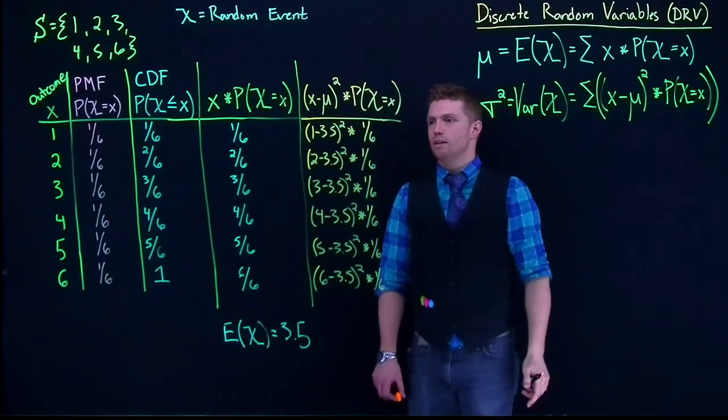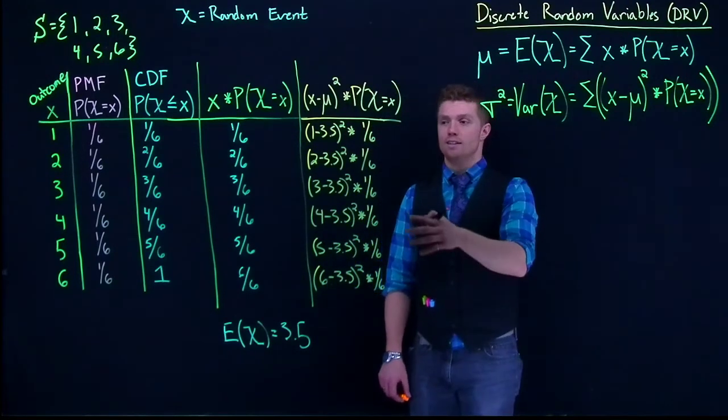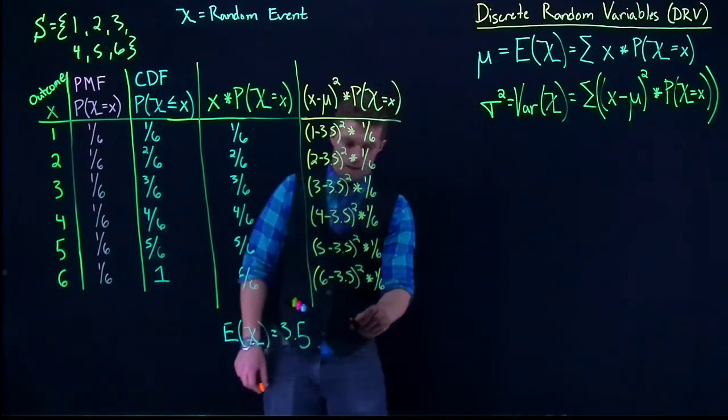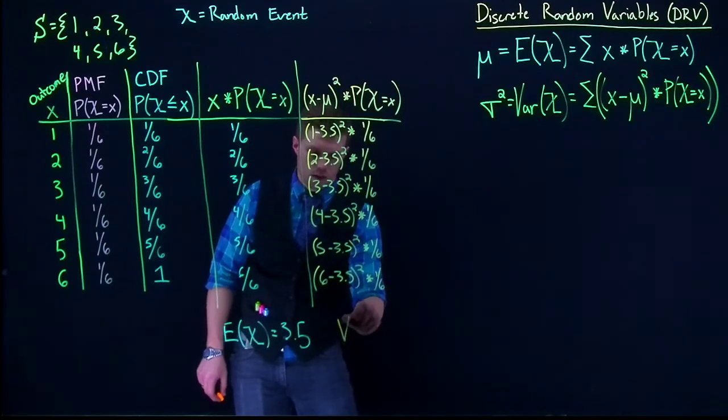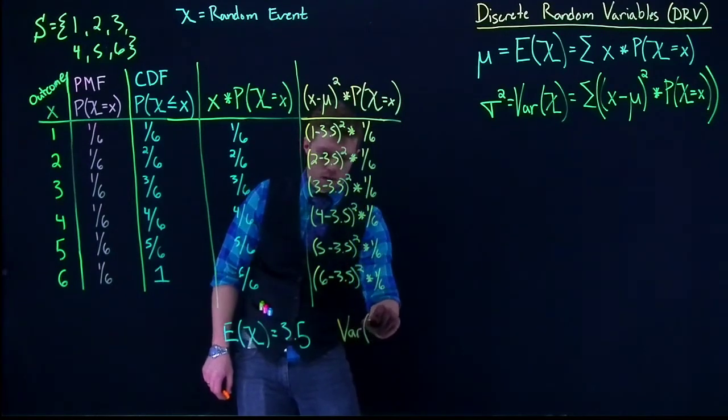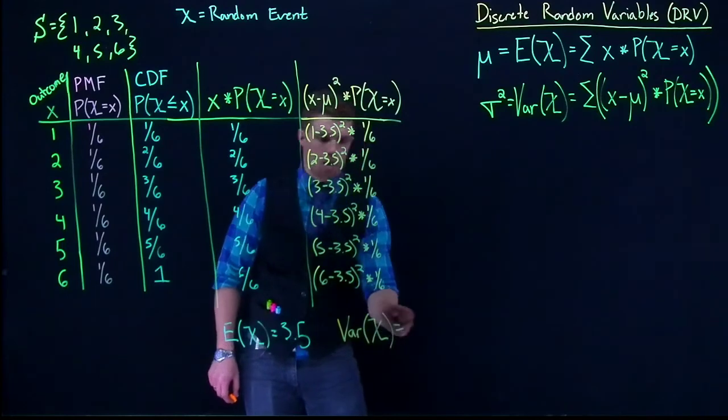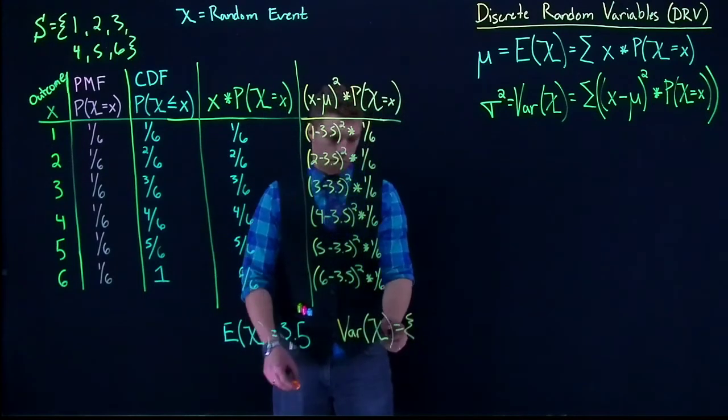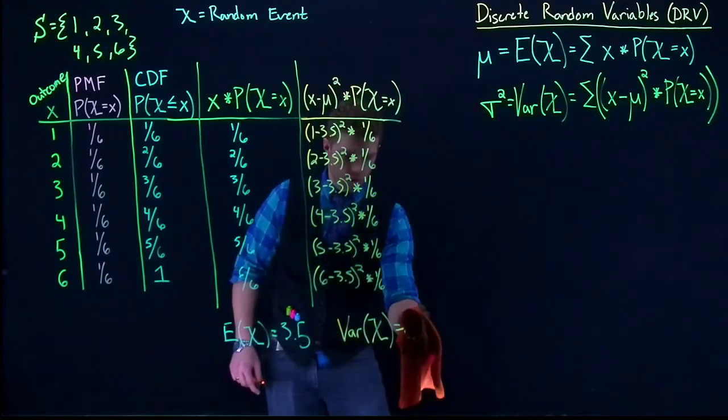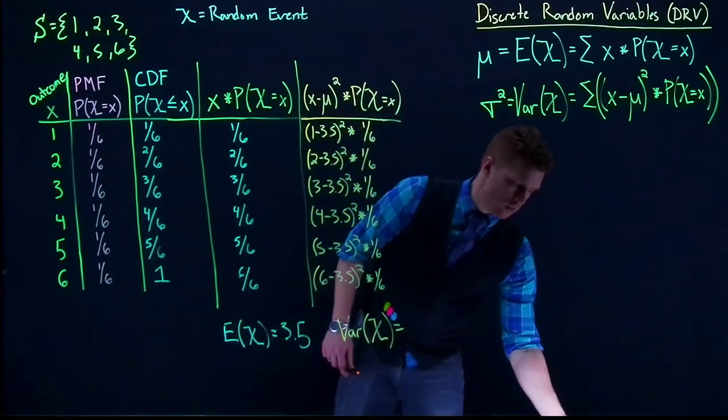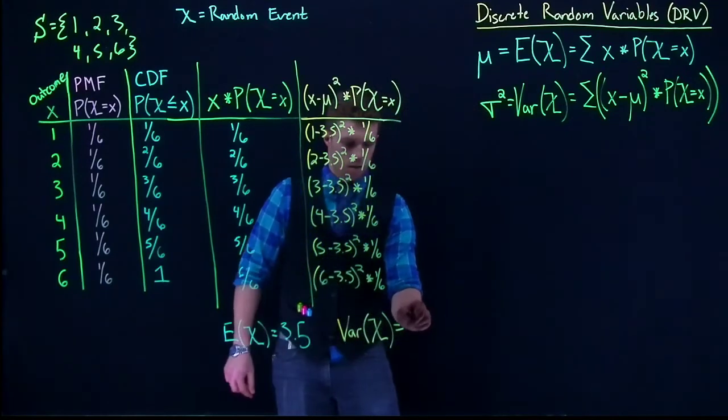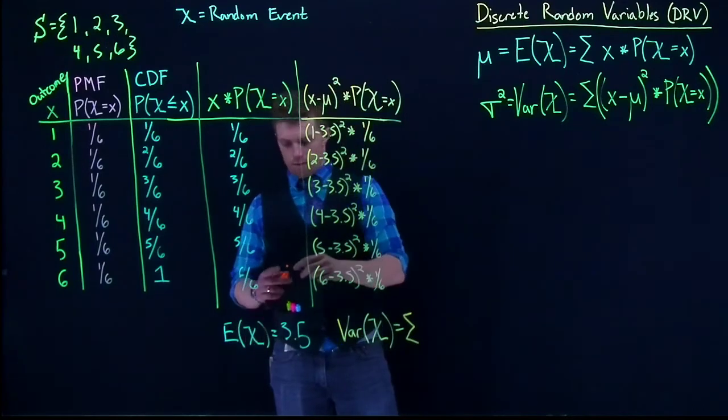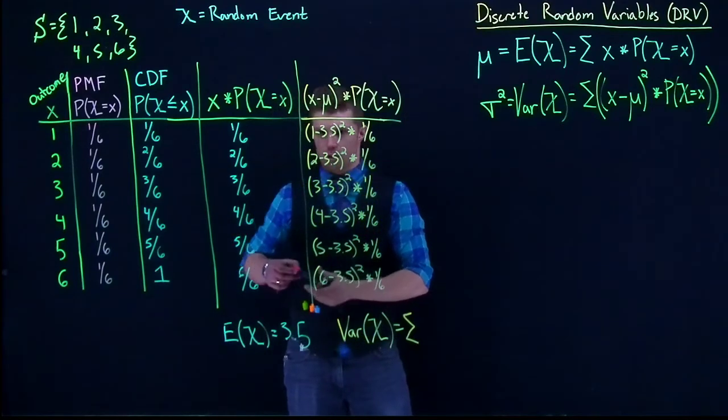I'm not good enough with decimal multiplication and squaring in order to figure this off the top of my head. But suffice it to say, the variance of x would be equal to the sum of all of this. So let me just circle it real quick just so that we have an idea.